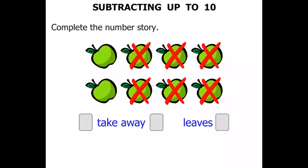Well the first thing we are going to do is count out how many apples we would have. Forget about the crosses for a minute. Let's count the number of apples. 1, 2, 3, 4, 5, 6, 7, 8. So we will write 8 to start with.